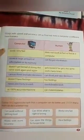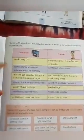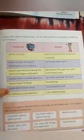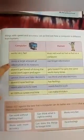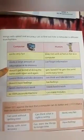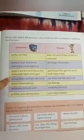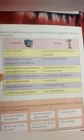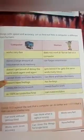Here is a table. You have to write this table, note down the points, and remember them. Computer: it works very fast. It stores a large amount of information in its memory. It doesn't get bored of doing the same work again and again. It cannot think and take decisions on its own — you have to give it a command, and then it gives a result.